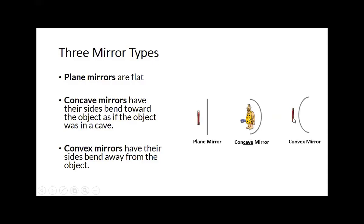And then convex — really the way I think of it is it's not concave and it's not planar, it's the other one. With convex, the outside of the mirror is going to be bending away. Based on the type of mirror you have, you're going to have a different type of image forming. Tomorrow we're going to look at lenses and look a little bit more about how these images form.